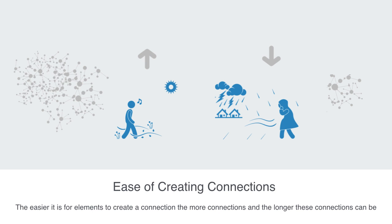And inversely, the more resistance there is for nodes to create connections, the less there will be, and the network will disintegrate — with the most costly ones, that is those maintained over a greater distance, being the first to go.